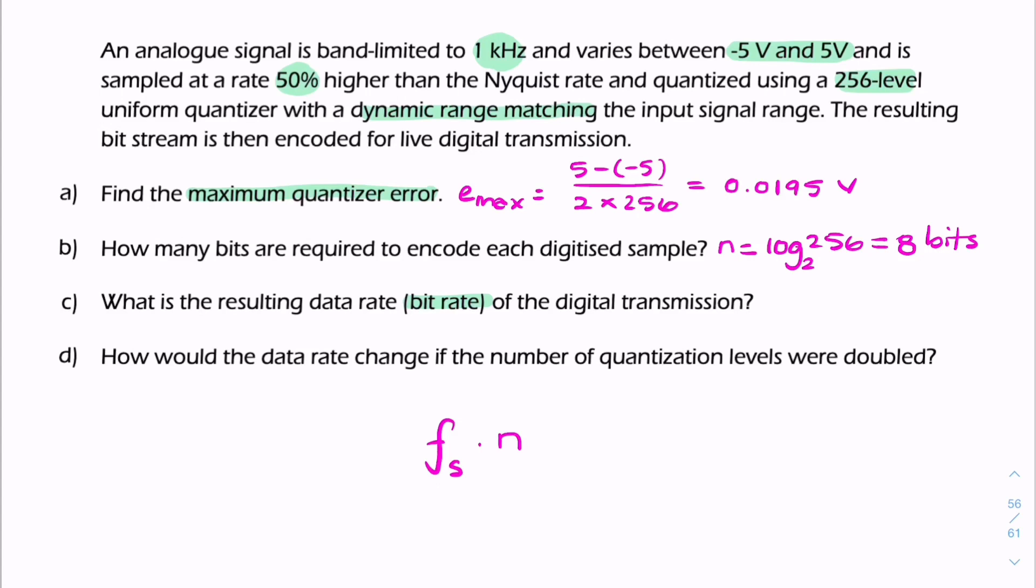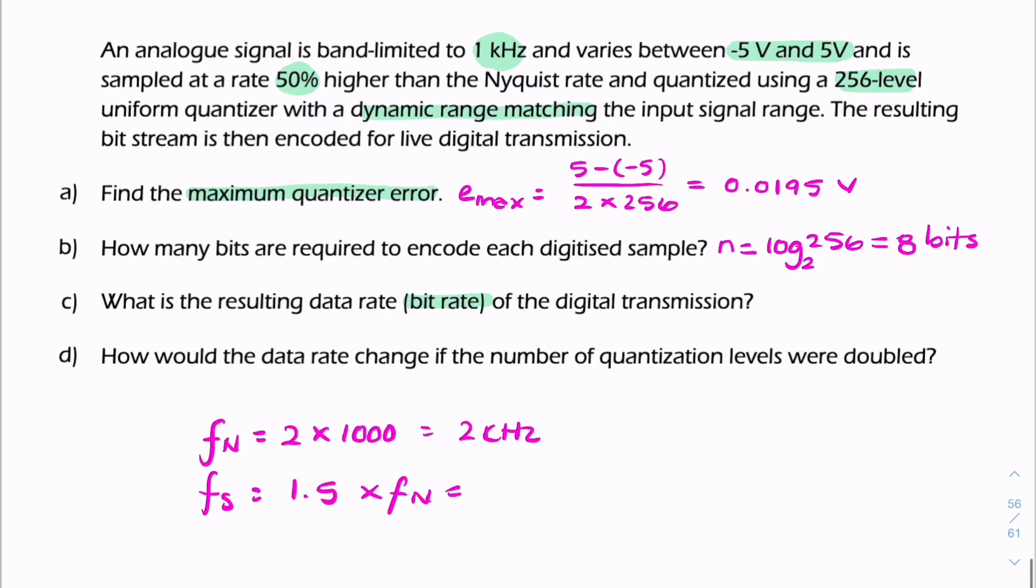If you multiply the sample rate, and given the sample rate indirectly, we're told that it's 50% higher than the Nyquist rate. The Nyquist rate being twice the frequency of the signal, or twice the highest frequency of the signal. So Fn is 2 times 1,000. Therefore, the sample rate is 1.5 times the Nyquist rate. So it's 3 kHz, because it says 50% higher. So 50% higher is like saying 1 plus 50 over 100 multiplied by Fn.